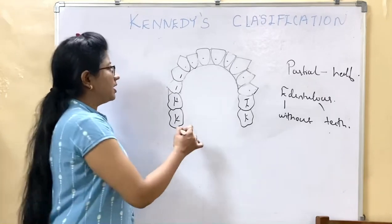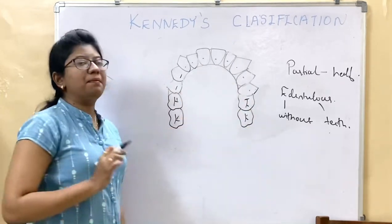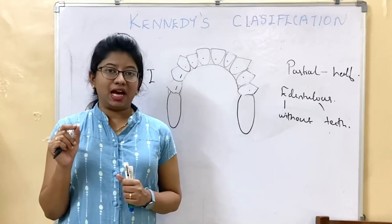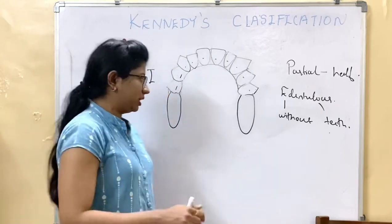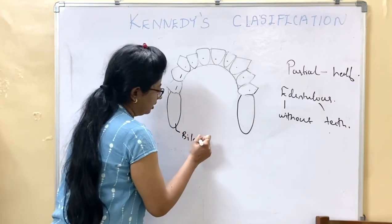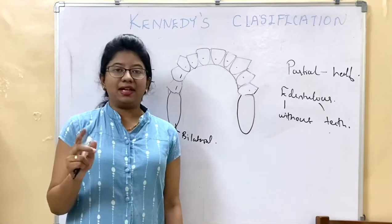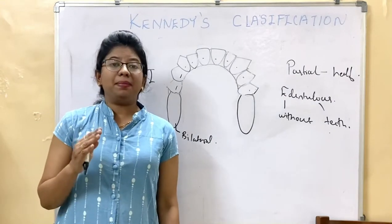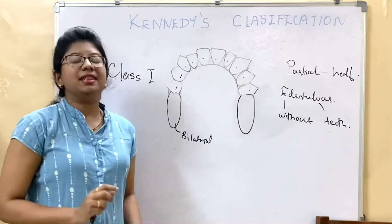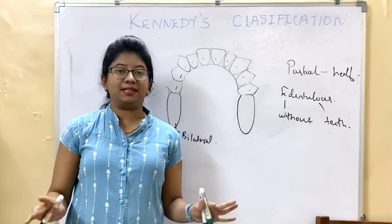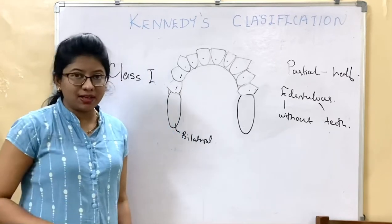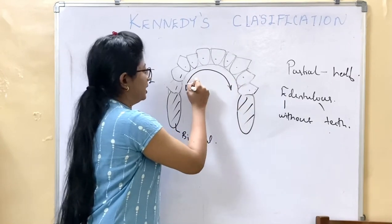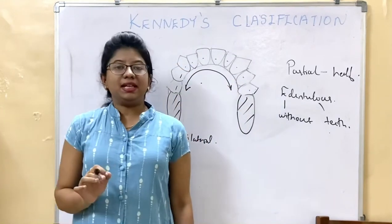In this figure, you can see it is an arch — a maxillary arch with all the teeth. In Class 1, there is a bilateral edentulous area in the posterior region. Bilateral means two sides, so there are two edentulous areas on both sides, and the remaining teeth are present anterior to them. These are the remaining natural teeth. That is Class 1.